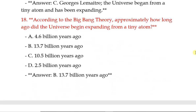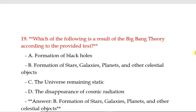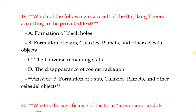According to the Big Bang theory, approximately how long ago did the universe begin expanding from a tiny atom? Correct answer: 13.7 billion years ago. Which of the following is a result of the Big Bang theory? Formation of stars, galaxies, planets and other celestial bodies.